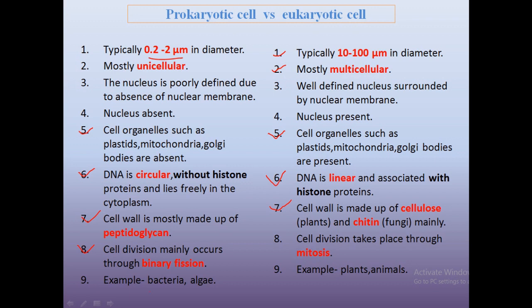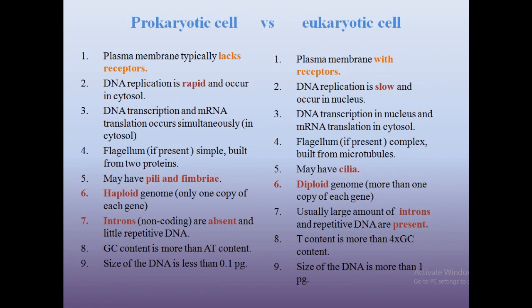Examples of prokaryotic cells are bacteria and algae. Examples of eukaryotic cells are plants and animals. The plasma membrane typically lacks receptors in the case of prokaryotic cells, but in eukaryotic cells there are plasma membrane receptors, as many cells are linked and receptors and signal polypeptides are needed for their functioning.